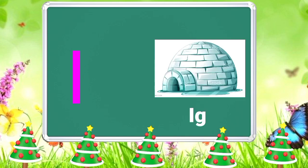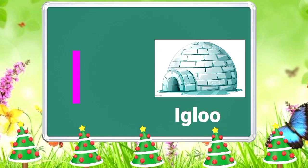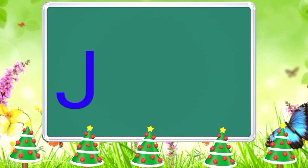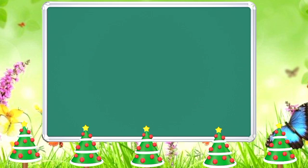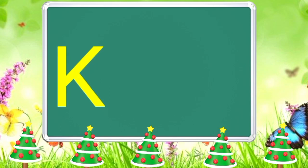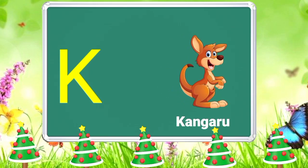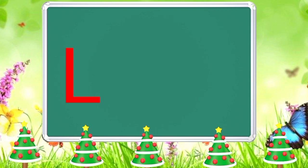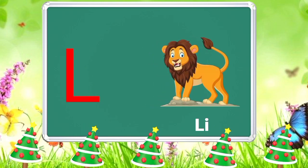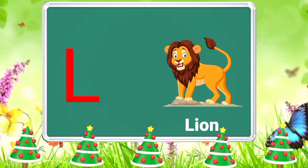I is for Igloo, I-I-I-Igloo. J is for Jump, J-J-Jump. K is for Kangaroo, K-K-Kangaroo. L is for Lion, L-L-Lion.